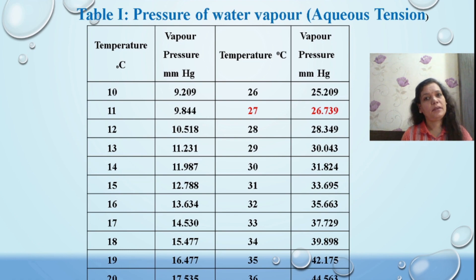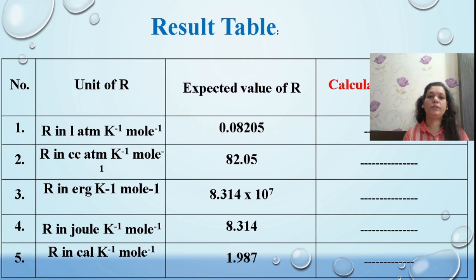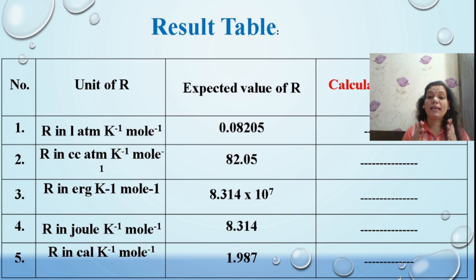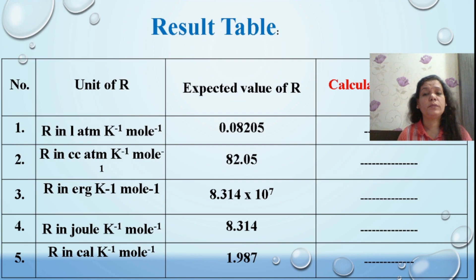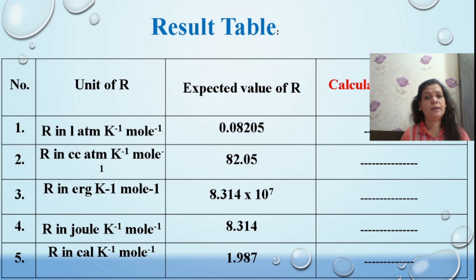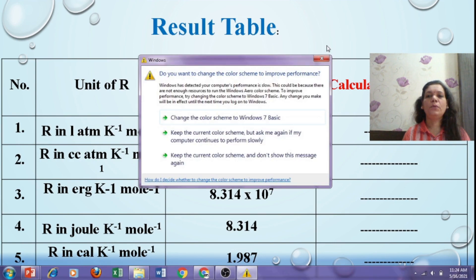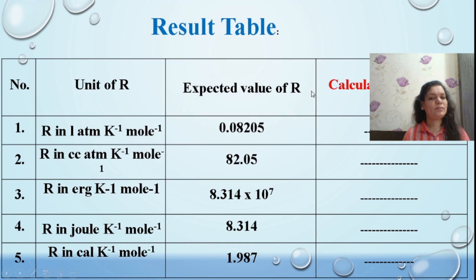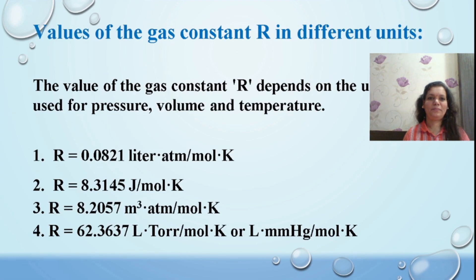A table of vapor pressure in mm Hg versus room temperature is provided — for example, at 27°C the vapor pressure value is given. A results table is also provided showing the expected values of R in all units. Using the observation ranges given, calculate your values and compare them with the expected values to report your data with respect to the molar gas constant.